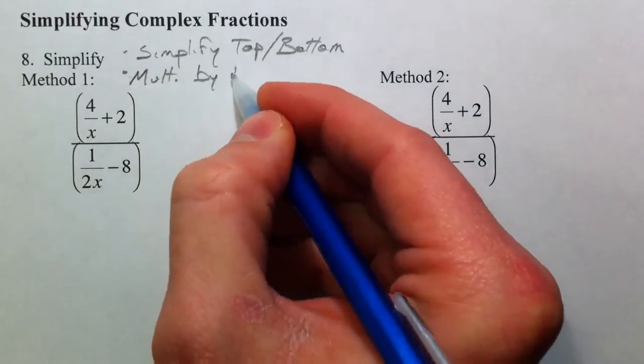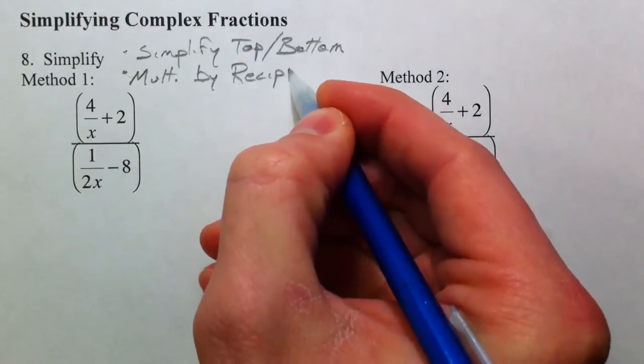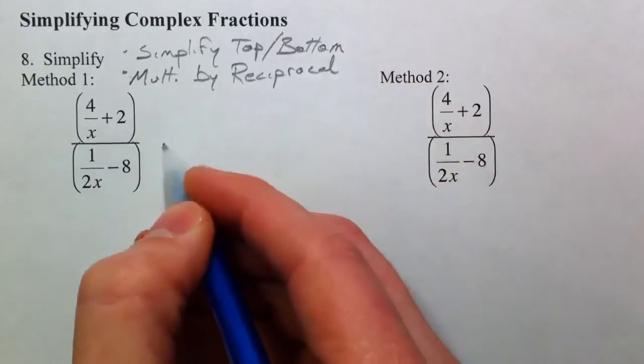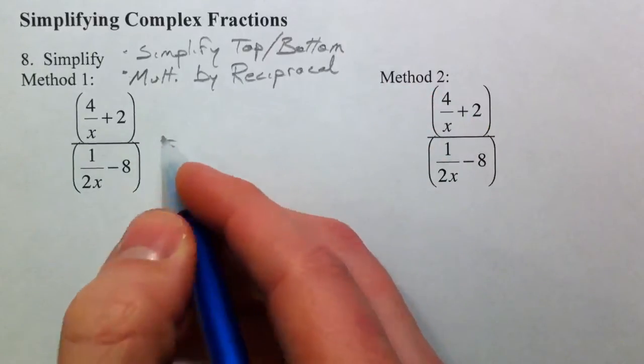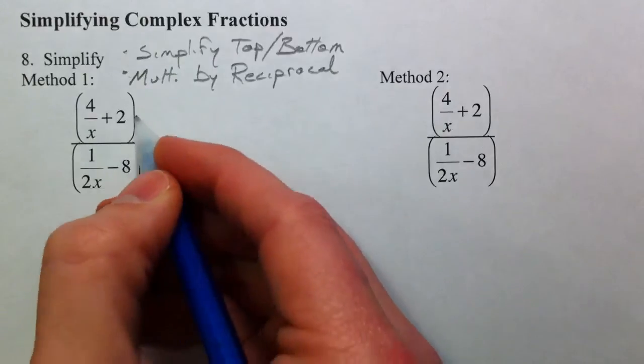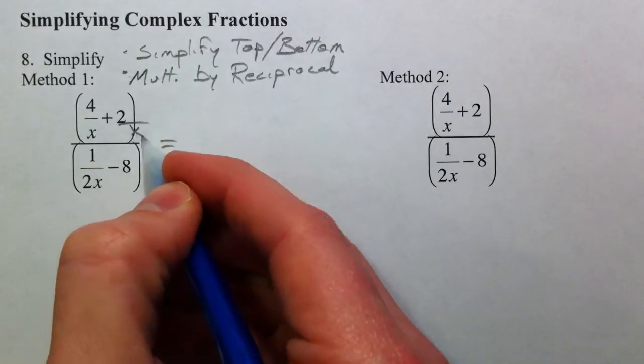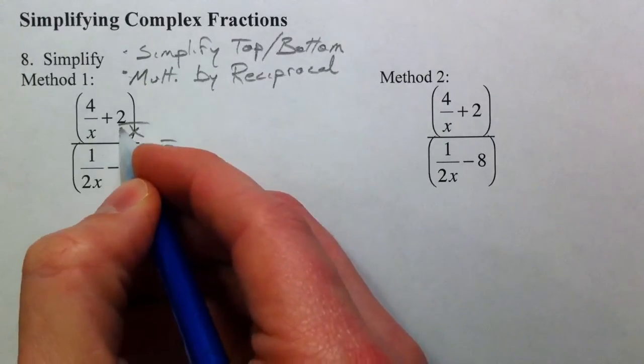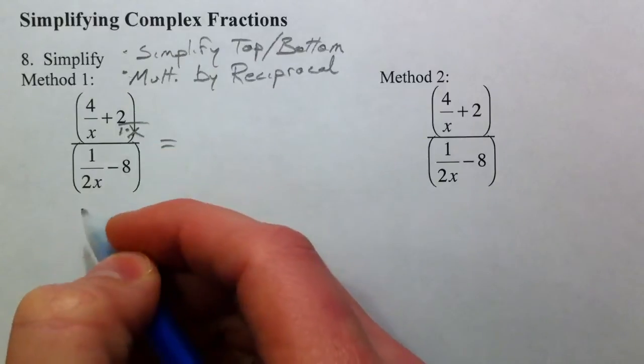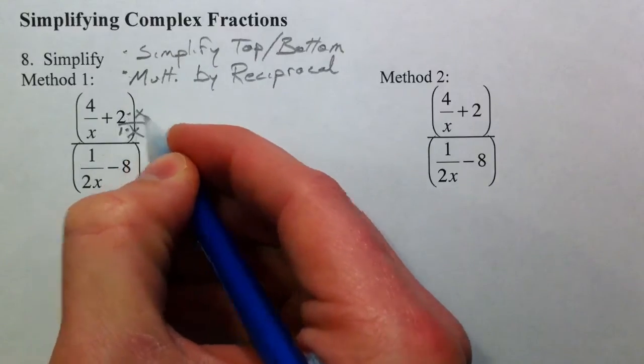So let's do that. In order to do that, we need common denominators up top. The only denominator is x, so I'm going to make this x. So this 2 over 1 needs to be multiplied by x, so top and bottom by x.